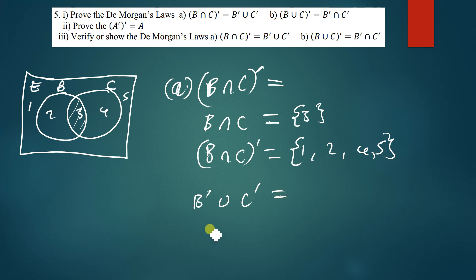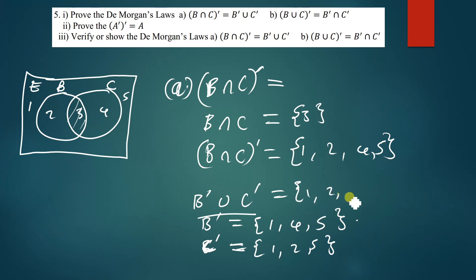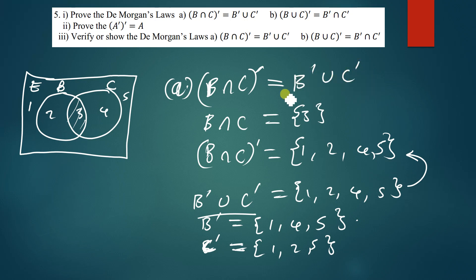Then we look at the right hand side which is Bᶜ∪Cᶜ. You first find Bᶜ and add it to Cᶜ — combine the two sets. Bᶜ is simply the elements not in B, so you have 1, 4, and 5. Cᶜ is the elements not in C, so we have 1, 2, 5. Combining the two sets we get 1, 2, 4, 5. When you compare this set with the left hand side, they are the same — this proves that (B∩C)ᶜ is equal to Bᶜ∪Cᶜ.